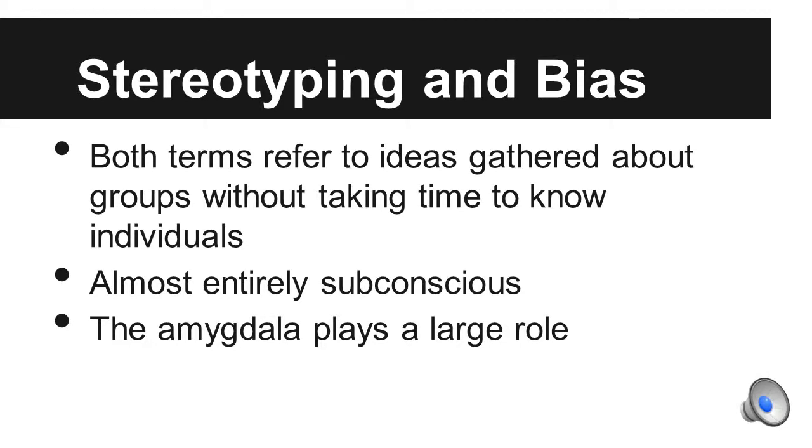Stereotyping and bias are both similar terms, both of which can most easily be defined as a subconscious process during which ideas are made about a group without taking time to get to know and relate to individuals of said group.